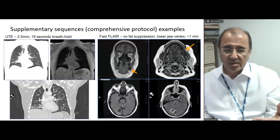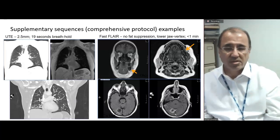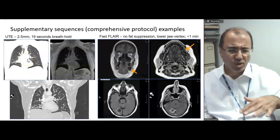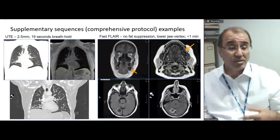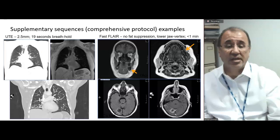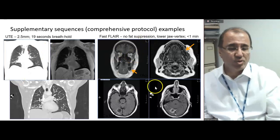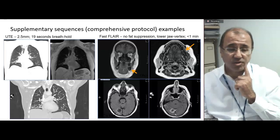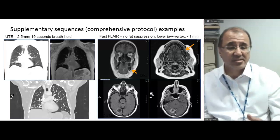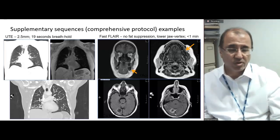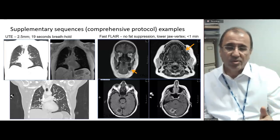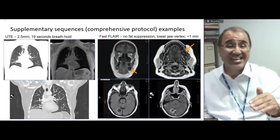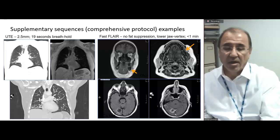We almost always do additional sequences: a UTE sequence, usually coronal but increasingly axial, to look at the lungs — very effective for that. We also almost always do a brain FLAIR sequence, which enables us to look at osteonecrosis of the jaw and may reveal metastases, in which case we would give contrast. All in all, the comprehensive sequence should take less than one hour.